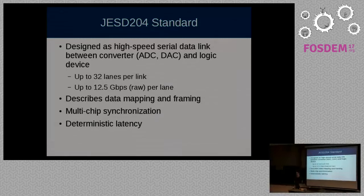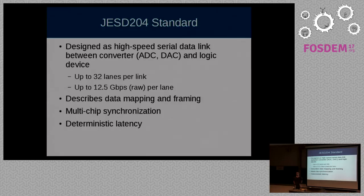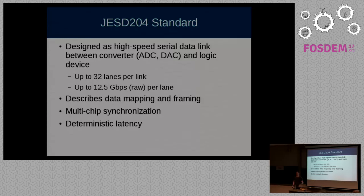JESD204B supports up to 32 lanes per link, and each lane can transport up to 12.5 gigabits per second of raw data. The actual useful payload is a little less due to protocol overhead, but overall you can get around 400 gigabits per second over one link. The standard not only describes how to get bits from A to B, but also assigns meaning to those bits — it describes how to map a sample onto those high-speed lanes.